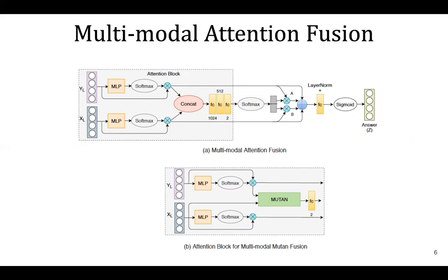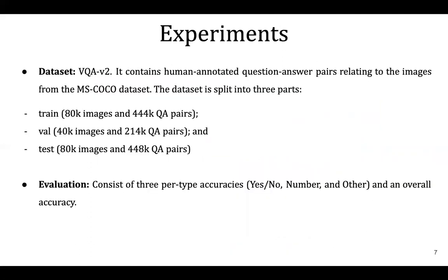Multi-modal mutant fusion, another version of multi-modal fusion where we incorporate mutant fusion instead of concatenation keeping the rest of the network similar to multi-modal attention fusion. We use VQA version 2 dataset to conduct our experiments.